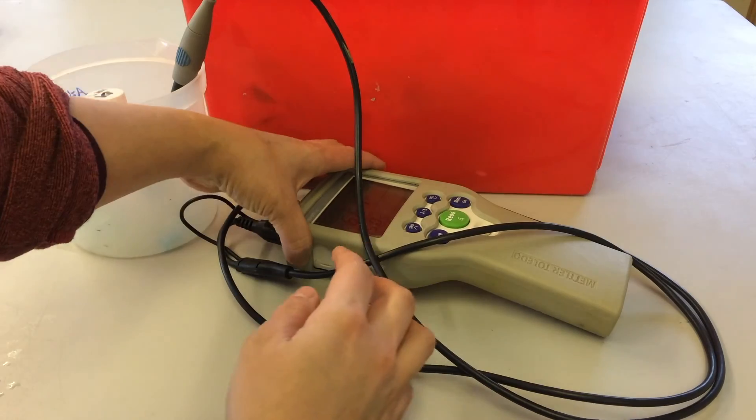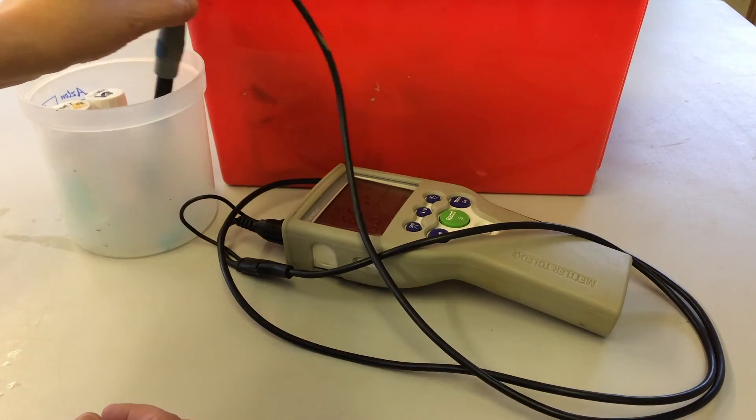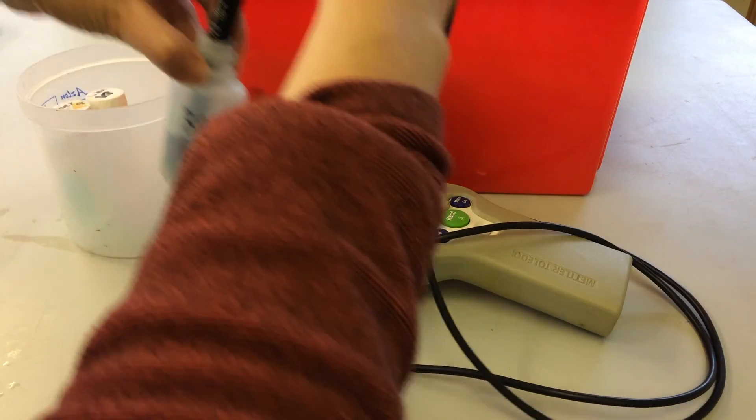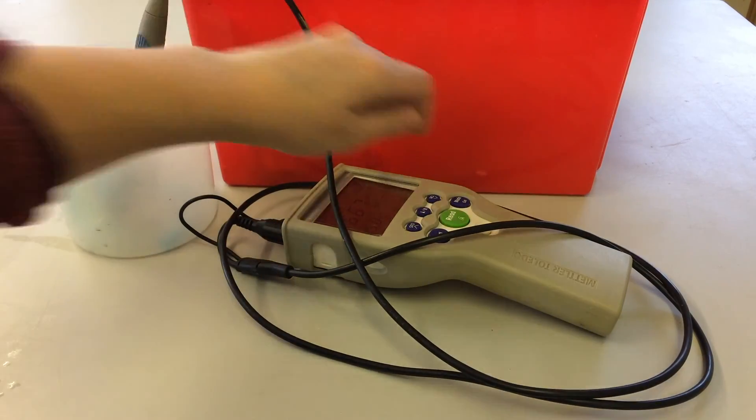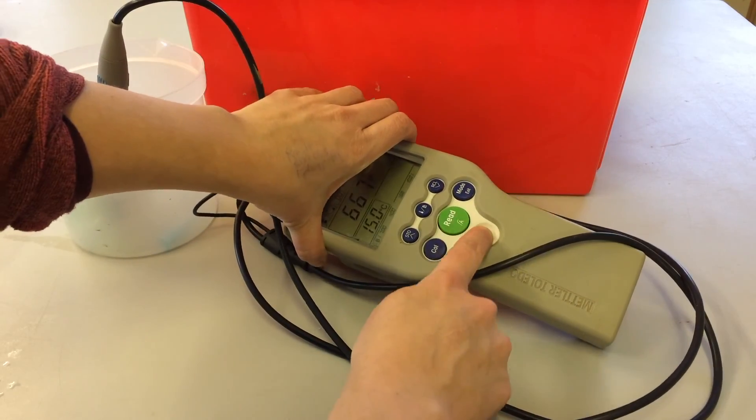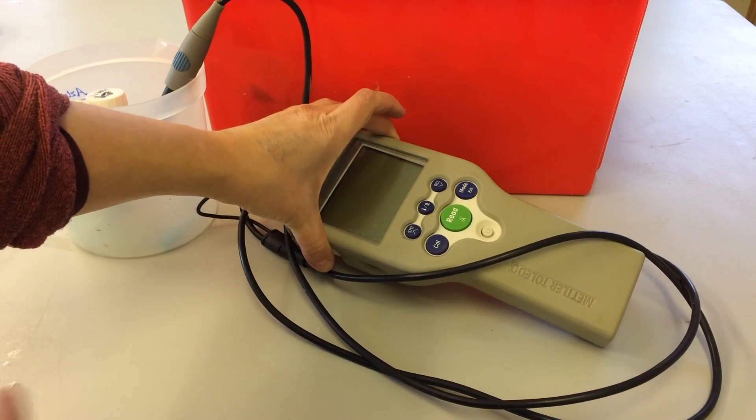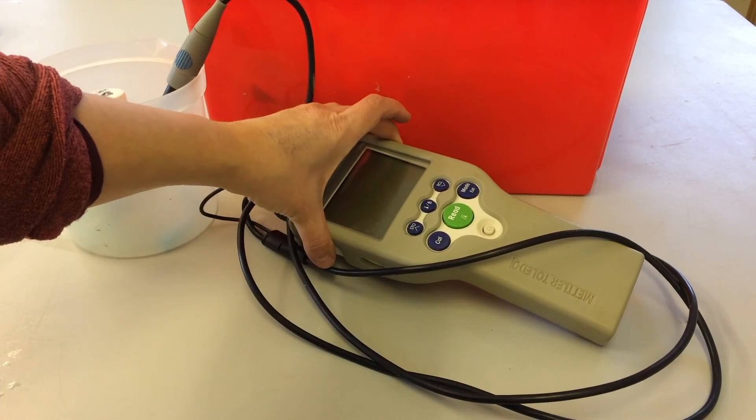And before you store it away, remember to make sure the probe is back in its three molar potassium chloride storage solution so it keeps nice and clean and moist. And turn the pH meter off by pressing the power button just once.